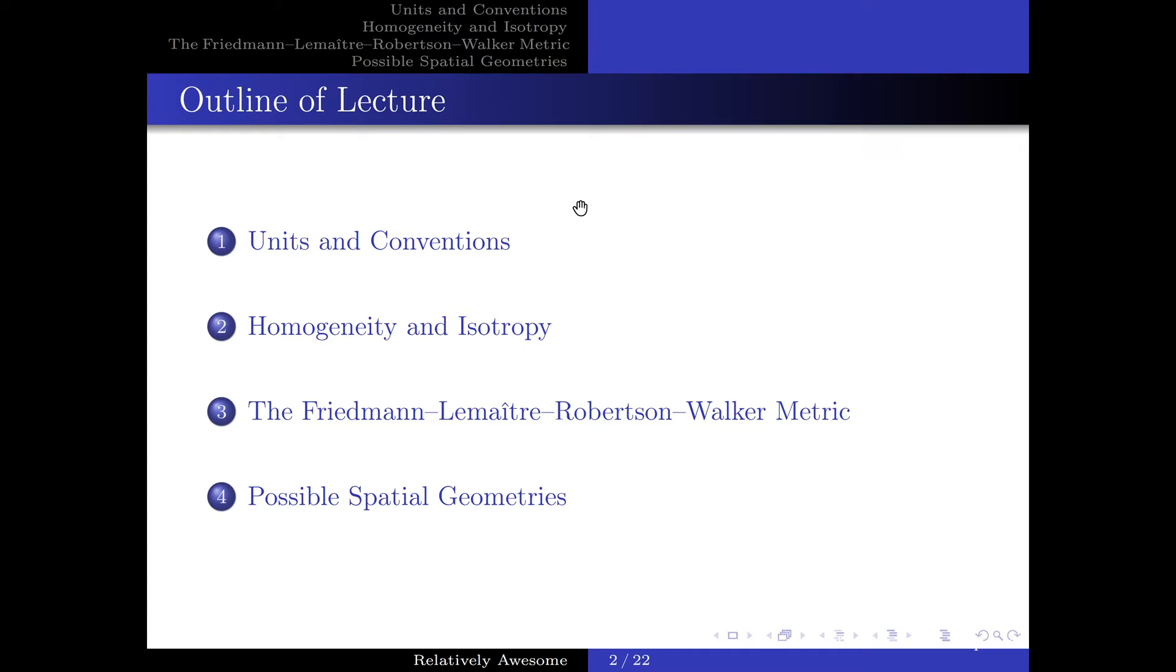The outline of this lecture is as follows. First, we will introduce some units and conventions to make life easier for ourselves. Then, we will mathematically formalize the notion of homogeneity and isotropy. Afterwards, we will derive the Friedmann-Lemaître-Robertson-Walker metric, and finally, we will use this metric to explore some of the possible geometries of spacetime.